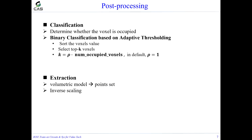For the decoded volumetric model from the decoder network, we need to classify and extract the points. Classification determines whether each voxel is occupied. We propose binary classification based on adaptive thresholding — instead of a fixed threshold, we set the threshold according to the number of occupied voxels in the original point cloud. Specifically, we sort the voxel values and select the top-k voxels, where k equals the original number of points times a ratio parameter (default ratio equals 1). After classification, points are extracted from the cube and inverse scaled.